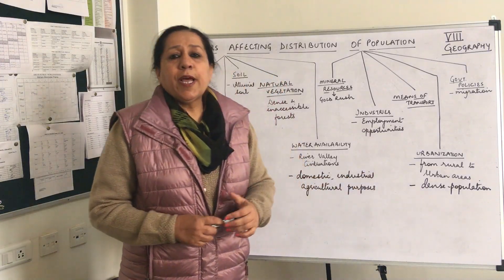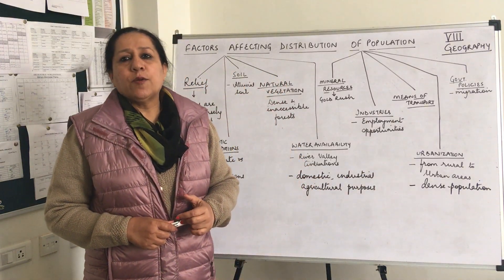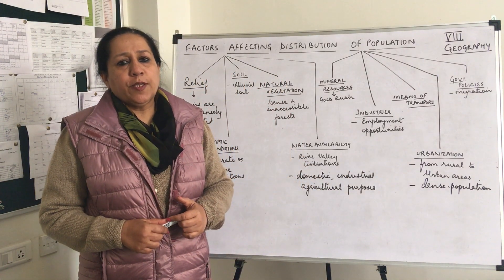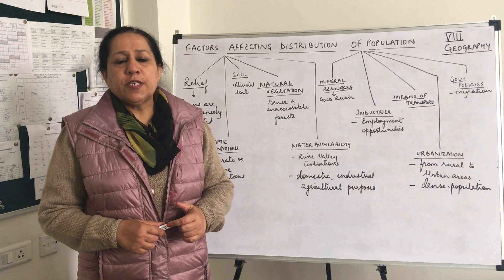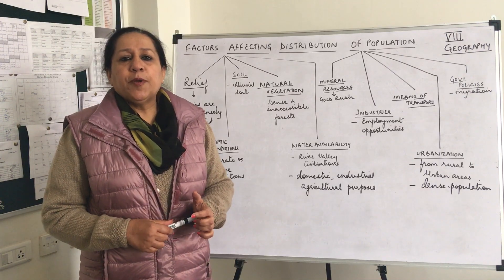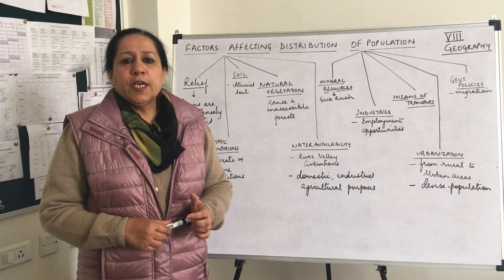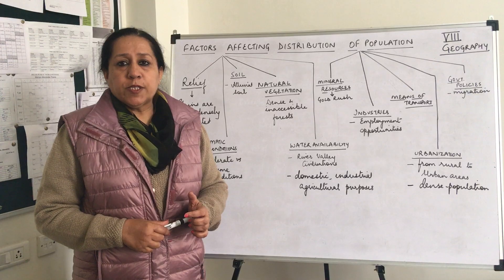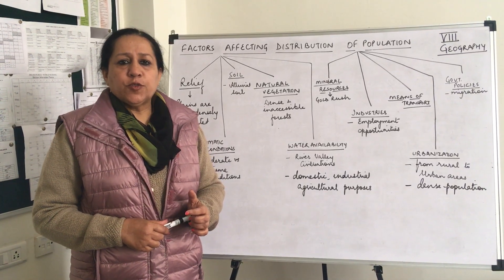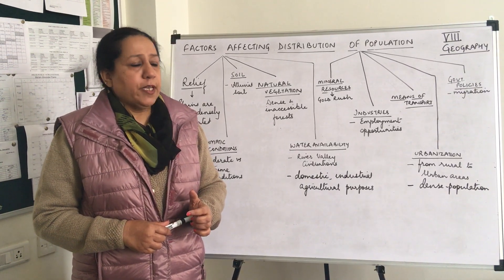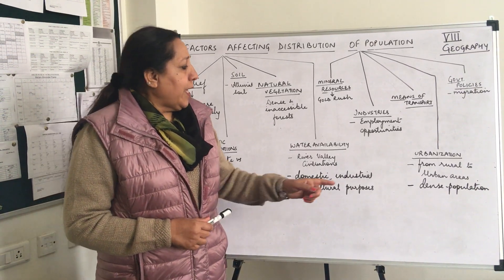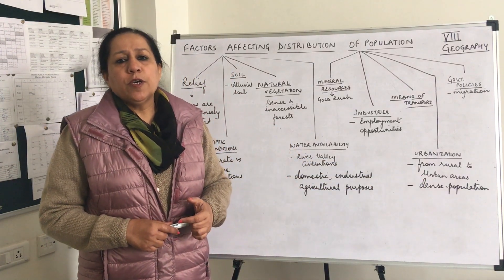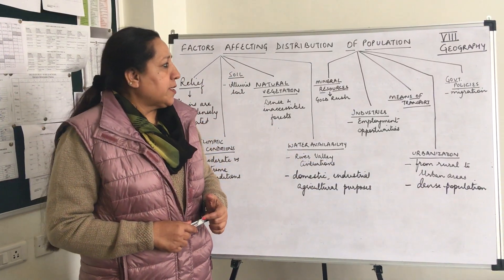Urbanization. People like to settle in towns and cities which provide them with a lot of opportunities and facilities. It may be recreation, electricity, good water supply, roads, transport, education, medical, and so on. And thus there has been a heavy migration from rural to urban areas.